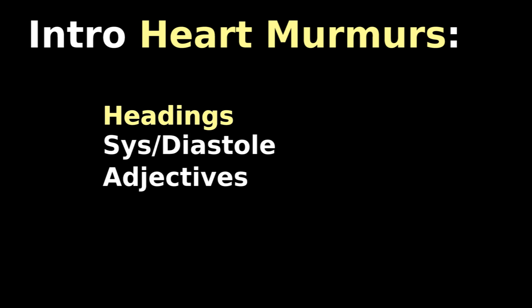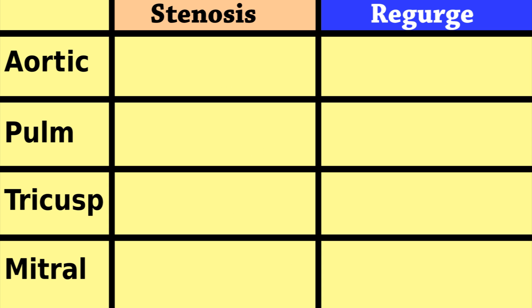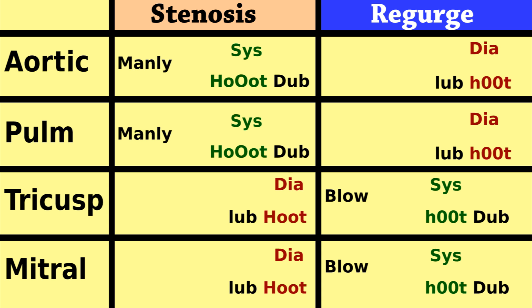If you can draw this table, you can start identifying textbook examples of eight heart murmurs via headphones.